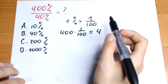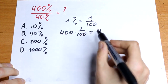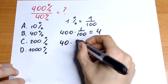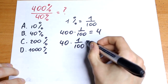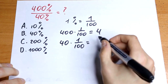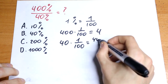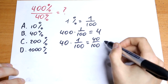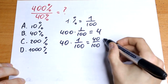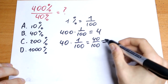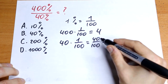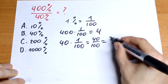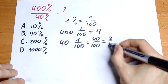How can we simplify the denominator using the same logic? So we will have 40 times 1 over 100, and the answer will be 40 over 100. We can simplify this a little bit by dividing by 20, so we will have 2 over 5.